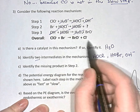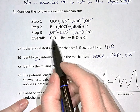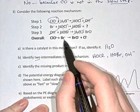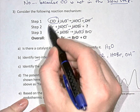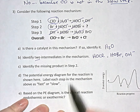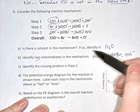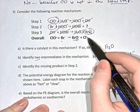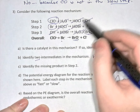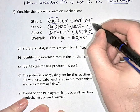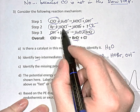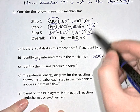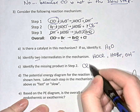Whatever's left should equal the overall reaction. The ClO⁻ in step one is a reactant, and bromide in step two is a reactant — those are the two reactants in the overall reaction. BrO⁻ is produced in step three as a product. But where is the chloride ion? It's the missing product in step two: Br⁻ collides with HOCl producing HOBr and Cl⁻. Now the equation is balanced, and the missing product is chloride ion.